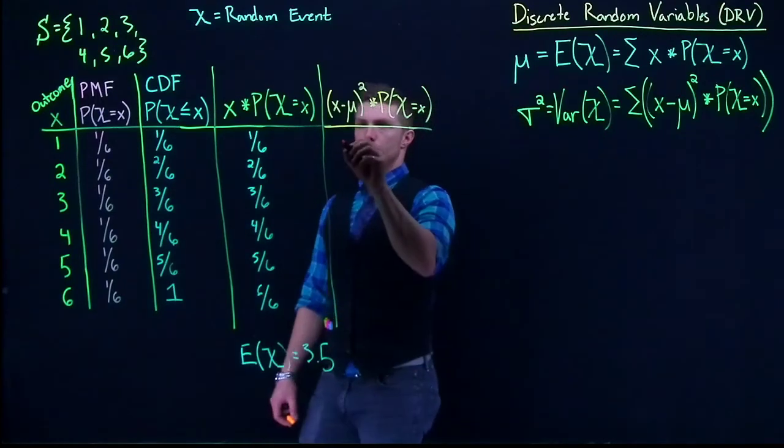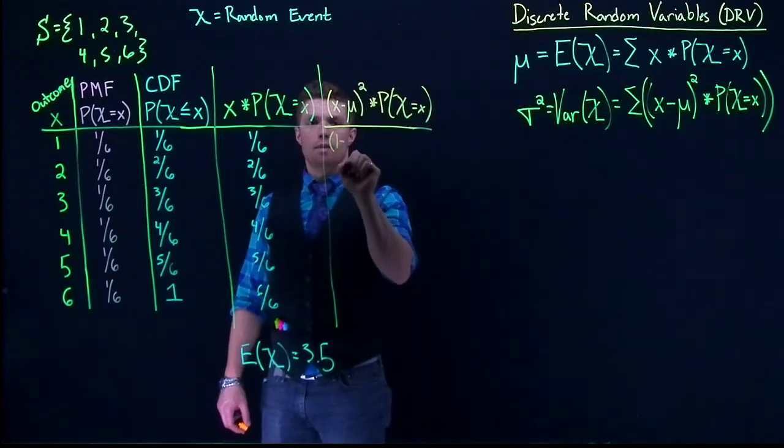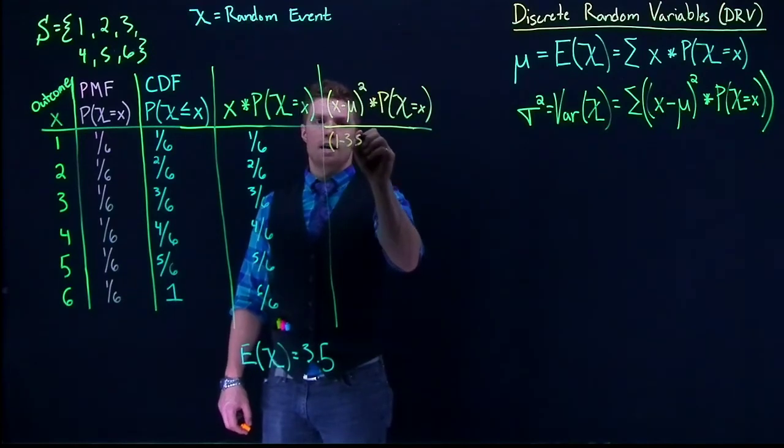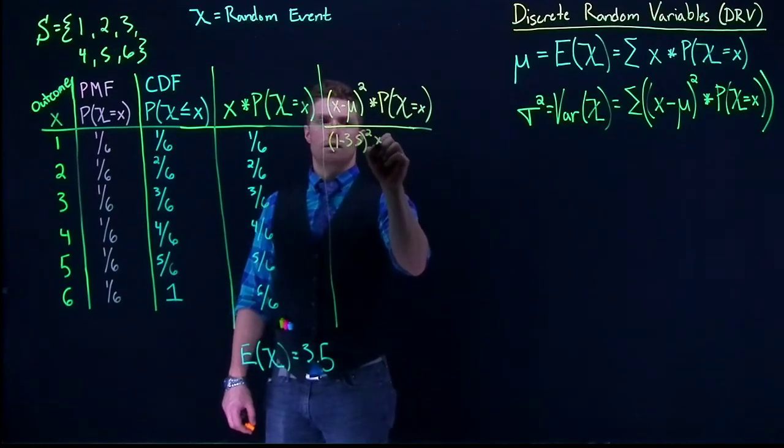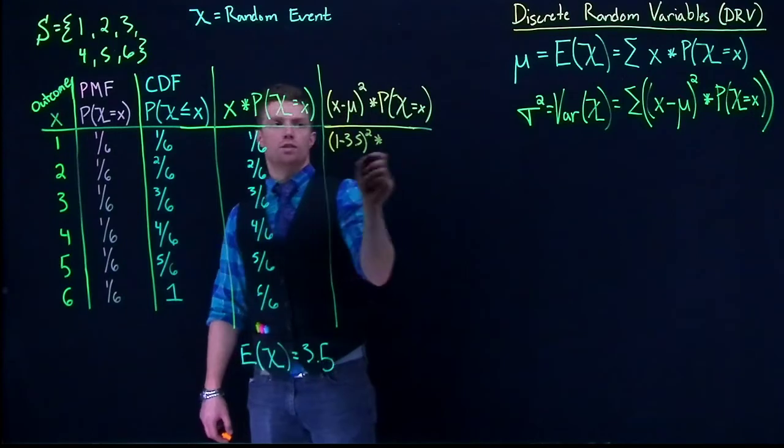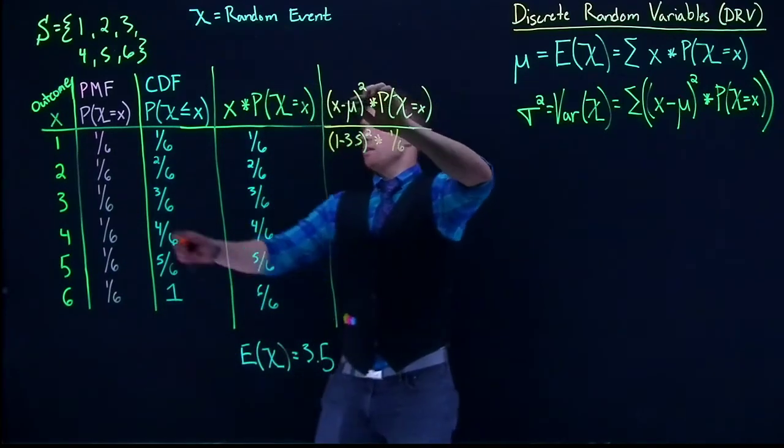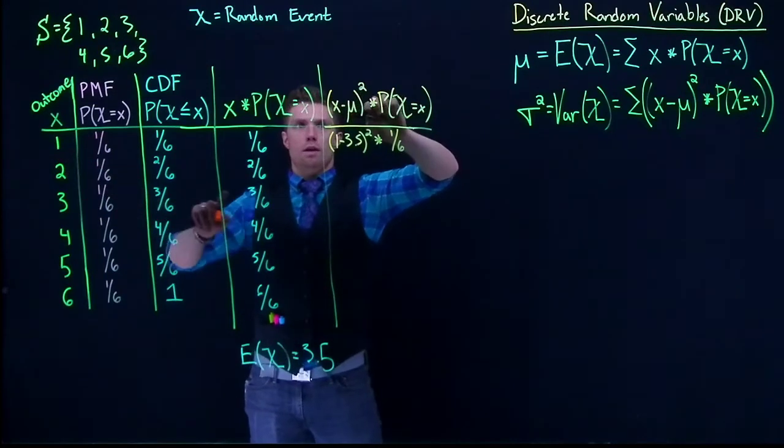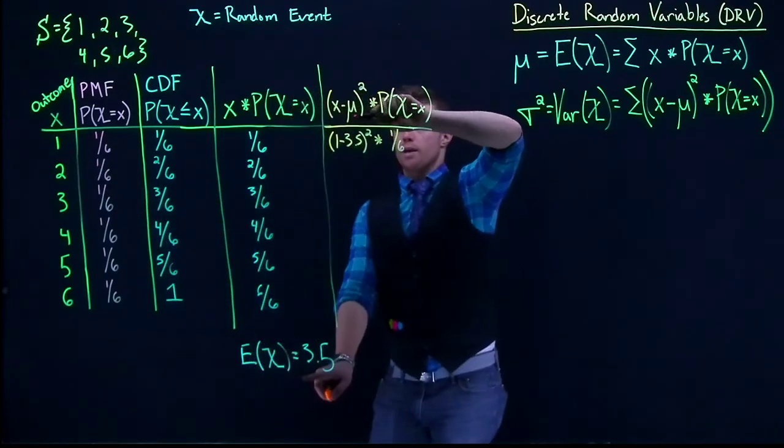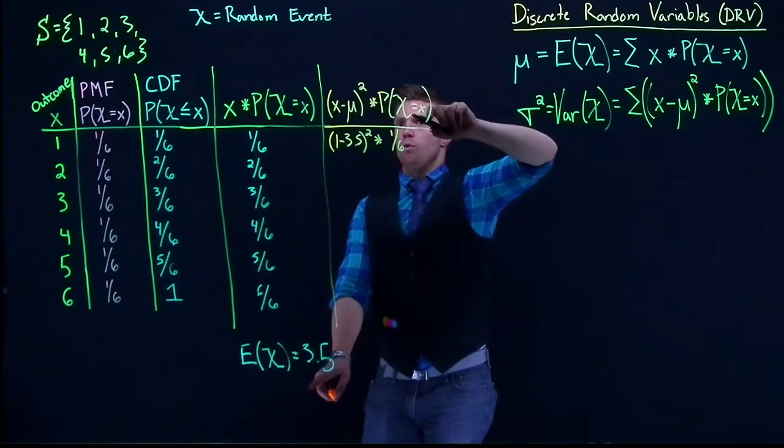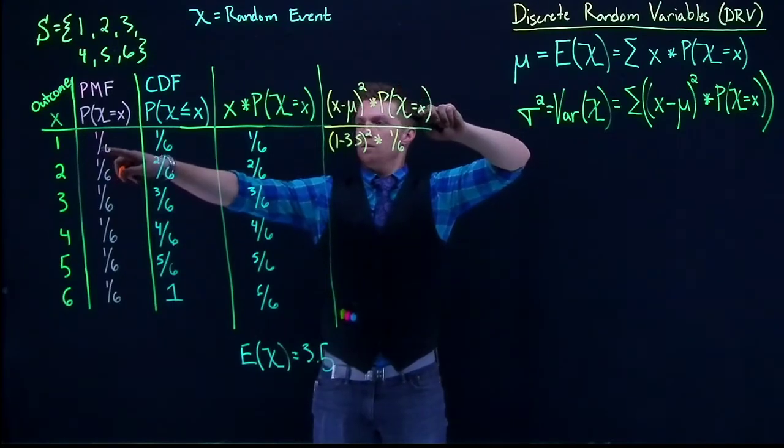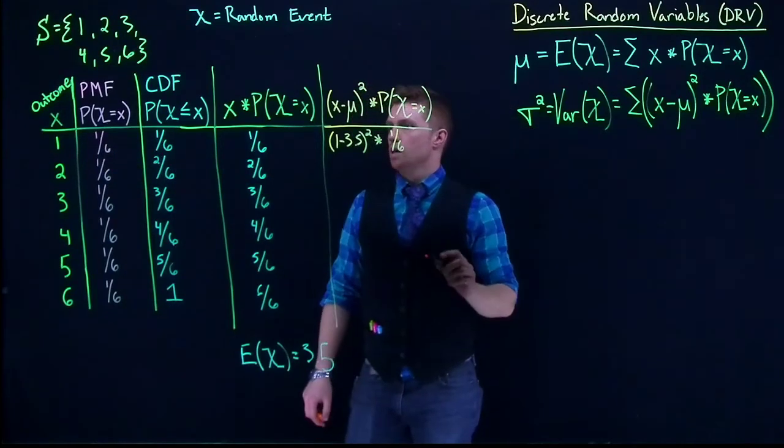Well, let's go ahead and do it. So we've got, this is going to be 1 minus 3.5 squared multiplied by 1/6. And I did this 1 minus 3.5 because the outcome was 1. The mean was 3.5, what we calculated down here. Square it, multiplied by the probability of success, this 1/6.